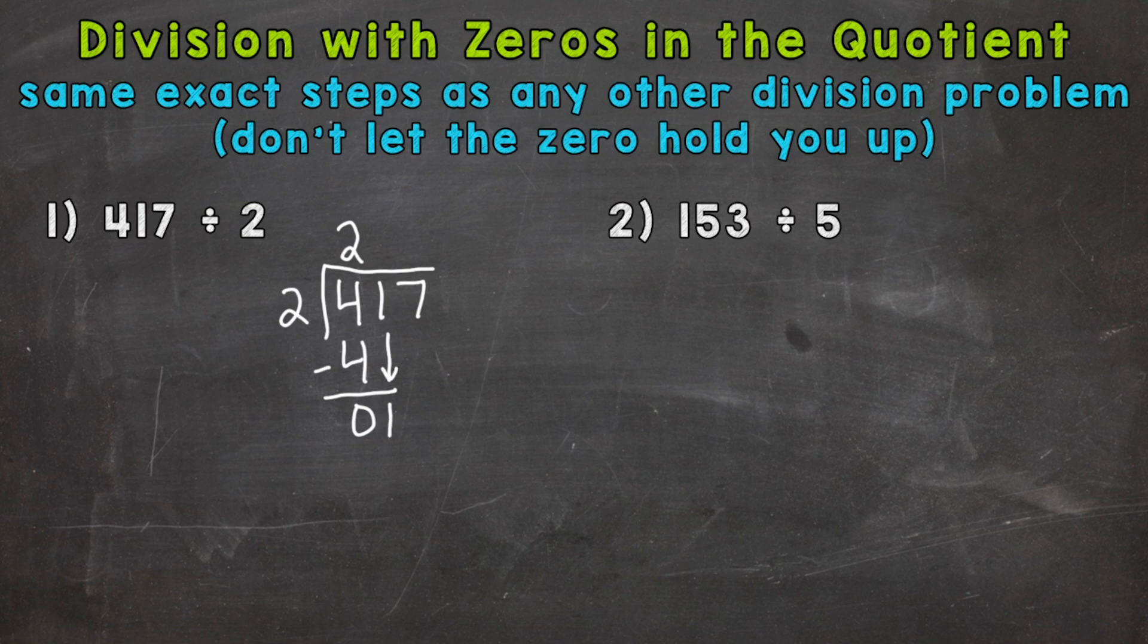Now this is the point in the problem that a lot of people get stuck. So we have 1 divided by 2, and we can't do this division problem and get a whole number. So what we need to do, since we can't pull any whole 2's out of 1, we need to put a 0 here in order to hold that place. We can't just keep it moving and not put anything there. So then, once we put the 0, we continue our steps.